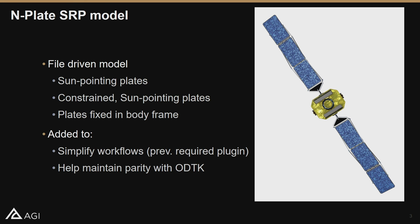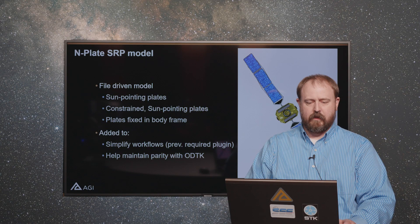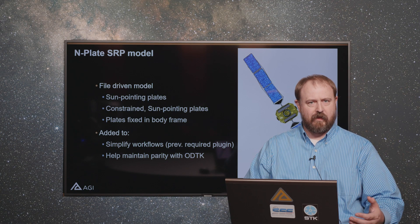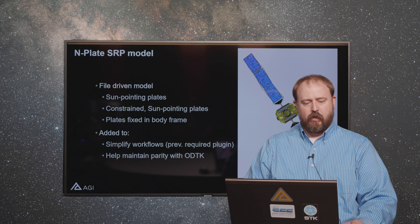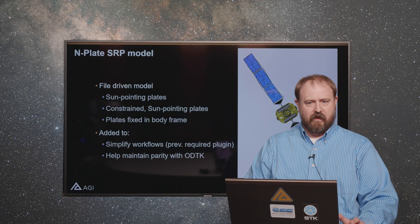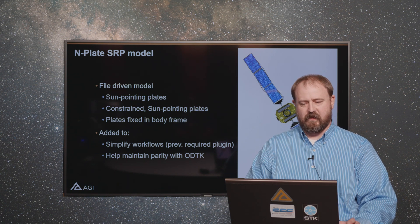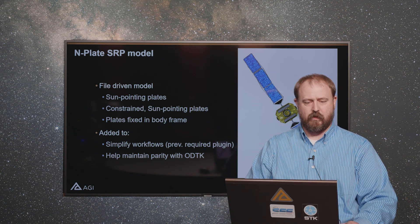Basically, you have a file-driven model where you can specify different plates for your in-plate model. Those plates could be sun-pointing plates — say for your solar panels — or constrained sun-pointing plates if you have a physical constraint on the spacecraft so you can't actually point toward the sun all the time. Or plates that are fixed in the body frame, to better represent your spacecraft for solar radiation pressure.